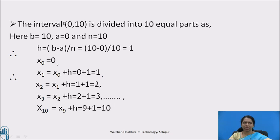Hence, our first ordinate x0 is 0 and x1 is obtained as x1 equals x0 plus h which equals 0 plus 1 equals 1. x2 equals x1 plus h, that is 1 plus 1 equals 2. Similarly, x3 is x2 plus h, that is 2 plus 1 is 3. We continue this process and at the last we get x10 as x9 plus h equals 9 plus 1 equals 10. In this way you have to write down the ordinates from the given interval.